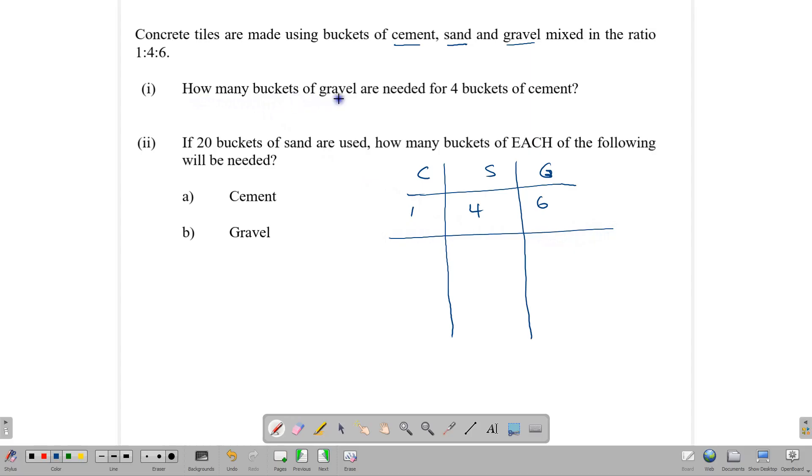Question 1 says, how many buckets of gravel are needed for 4 buckets of cement? If we have 4 here, we need to ask ourselves, what number do we need to multiply this number by to get 4? The obvious answer is we need to multiply it by 4. So 4 times 1 gives us 4, and that means we are multiplying the entire numbers in the ratio by 4. 4 times 4 gives us 16, and 4 times 6 gives us 24. The answer would be 24 buckets of gravel.